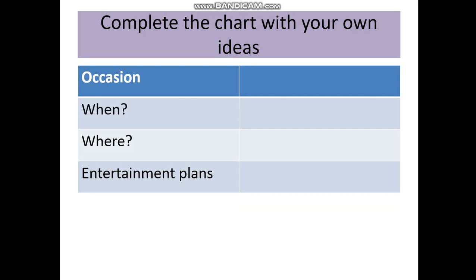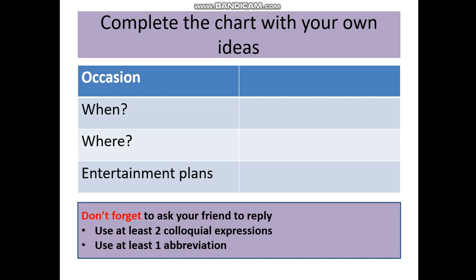Now it's your turn to make your own invitation. First, complete the chart with your own ideas. Decide what occasion you are having — is it a birthday party, an end of term party, or a Halloween party? Then decide when and where you are going to have your party, and finally think about entertainment plans — what you are going to do together. Use at least two colloquial expressions and at least one abbreviation, and don't forget to ask your friend to reply.